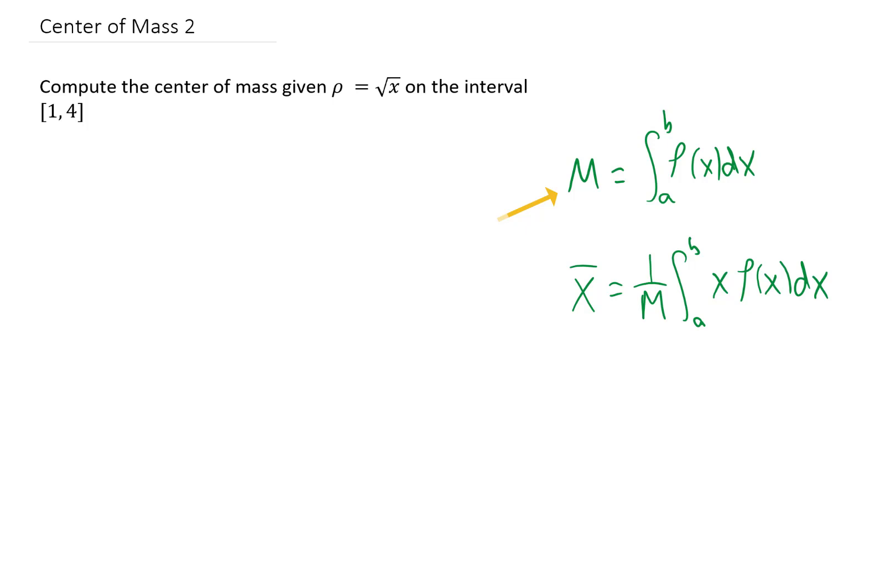The mass of the object can be found using this integral, and to find this integral, we just have to plug the density in and integrate, in this case, between x equals 1 and x equals 4. Let's see what that integral looks like. Okay, we plugged all of our values in.